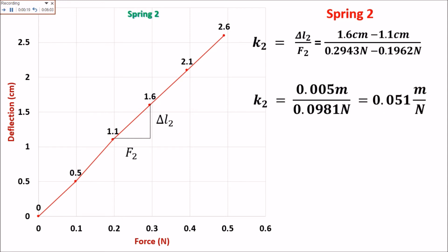So 1.6 centimeter minus 1.1 centimeter, divided by 0.2943 newton minus 0.1962 newton.